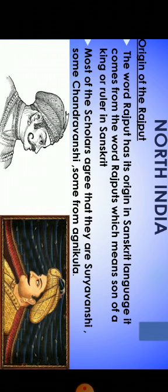Some Rajputs believe that they are Suryavanshi, they belong to the family of the sun. Some believe that they are Chandravanshi, they belong to the family of the moon. And some believe that they belong to the fire family. The most important Rajput clans were the Tomars, the Gahadavalas, Chandelas, Pratiharas, and the Chauhans. We'll read about these Rajputs — the Tomars, the Chauhans, the Solankis, the Paramars, the Gahadavalas, Chandelas of Bundelkhand, Gujarat Pratiharas, and the Palas.